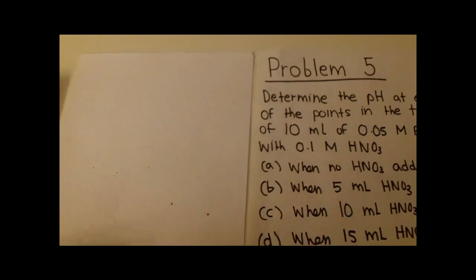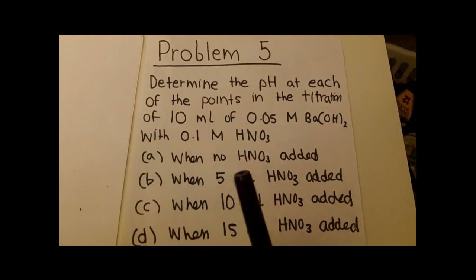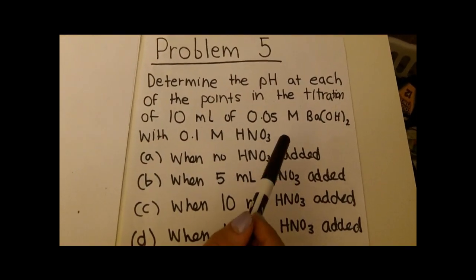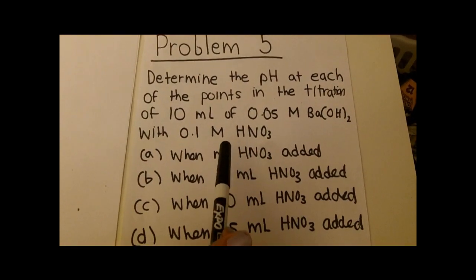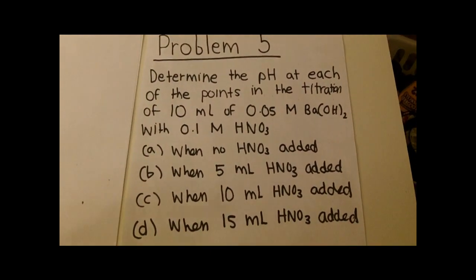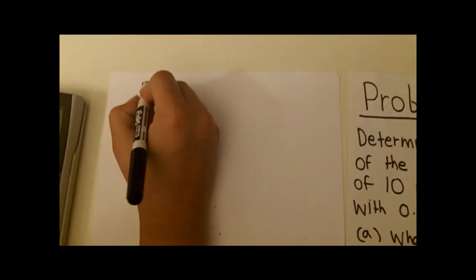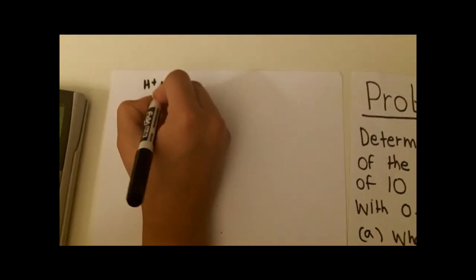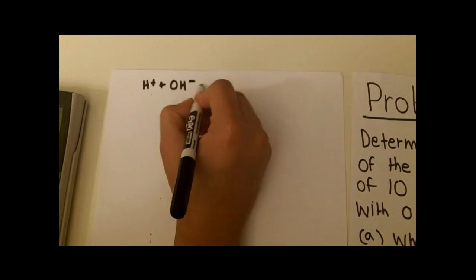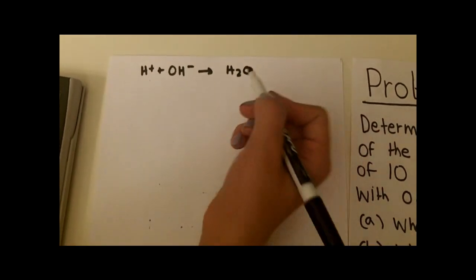First thing is to establish if the acid and base are strong or weak. We know that both of these are a strong base and a strong acid, and so therefore the net ionic equation of a strong acid, strong base will always be H⁺ + OH⁻ yields water.